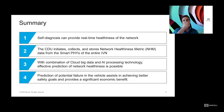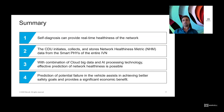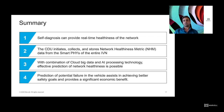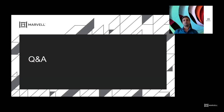In summary, self-diagnosis can provide real network healthiness, which brings significant value to the end system. A central diagnostic unit that continuously initiates, collects, and stores data about network healthiness from the smart PHYs in the car across the entire network makes this possible. Combining that data with big data in the cloud and AI processing enables effective prediction of network healthiness. Such prediction of potential failures can significantly assist in achieving better safety goals, as well as providing good economic benefits to both car manufacturers and car owners.